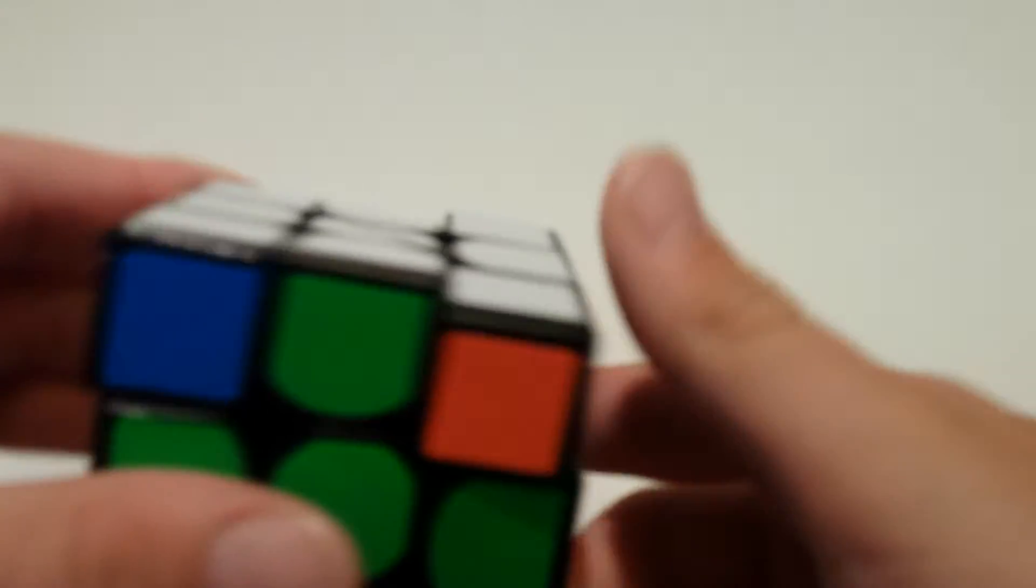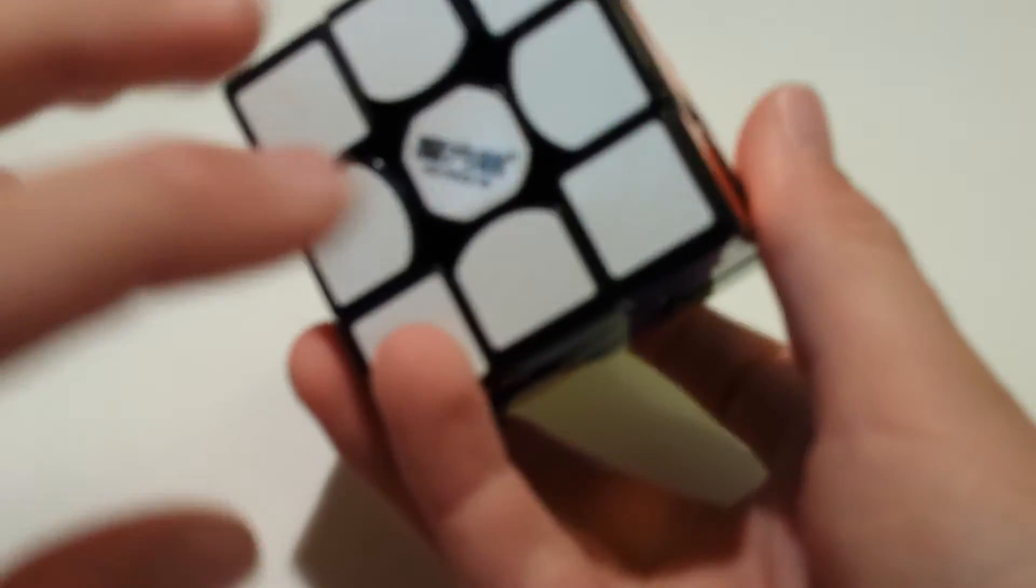And I know this is already going to be an A perm, this one right here. So I know there's not going to be parity this time. And now there's double A perm. There's an A perm here and an A perm here. Just like that. And that's how you solve it.